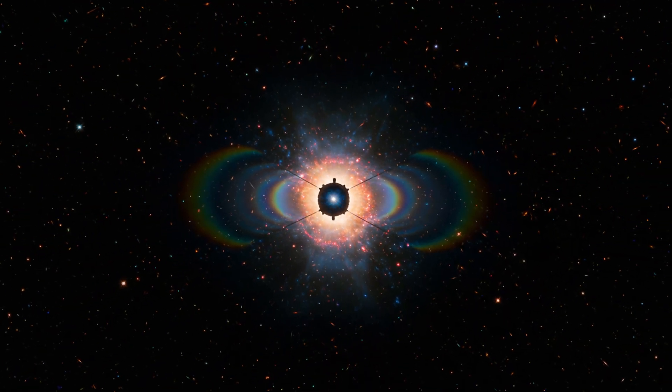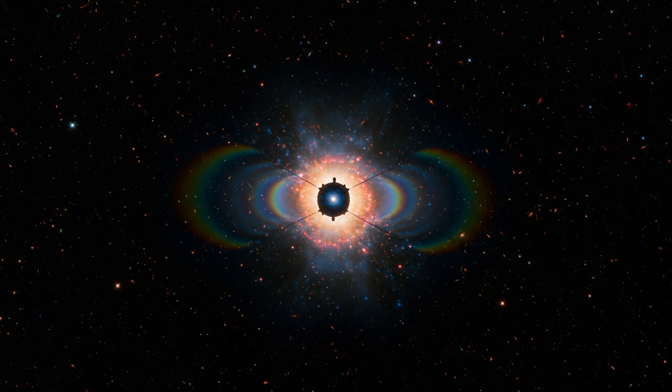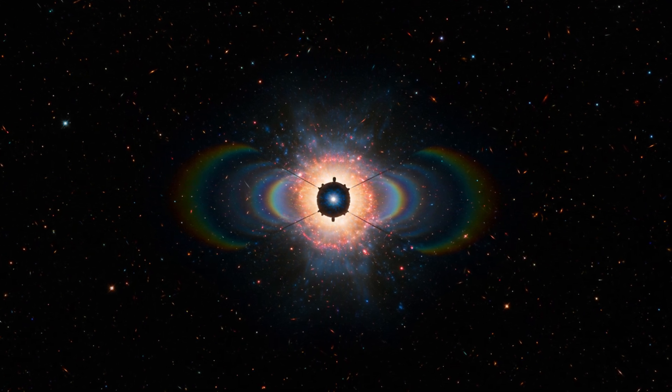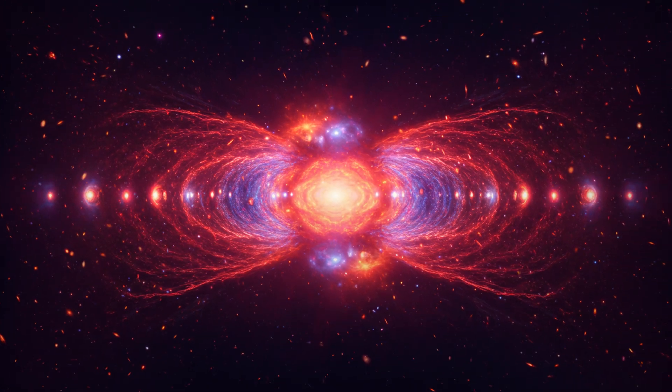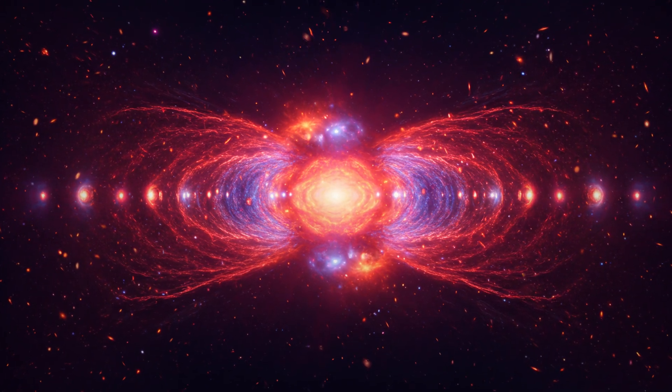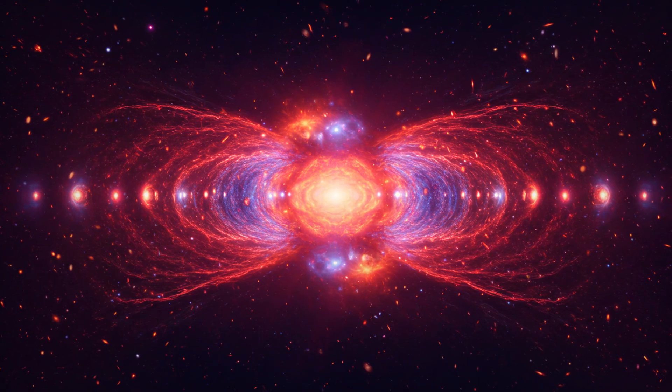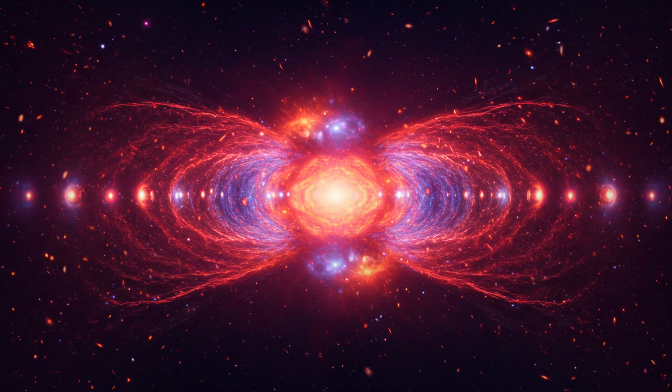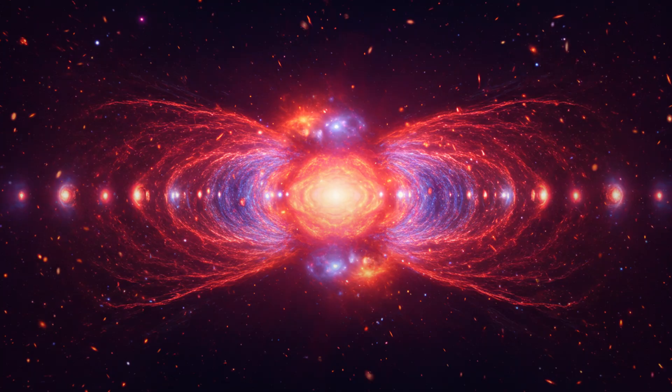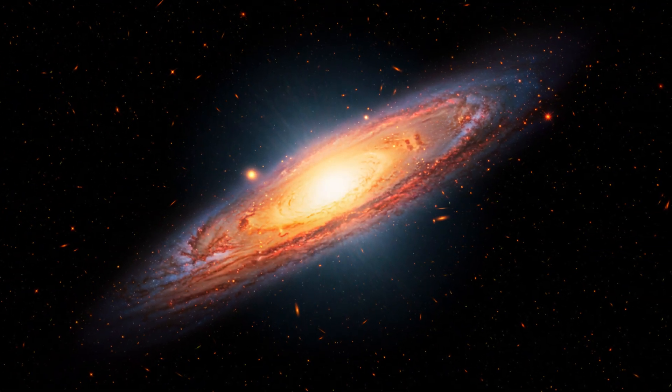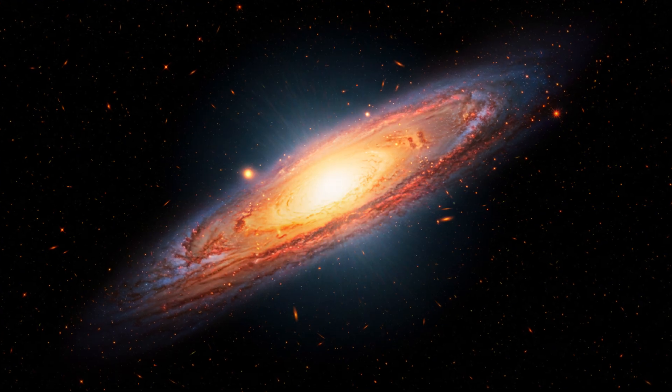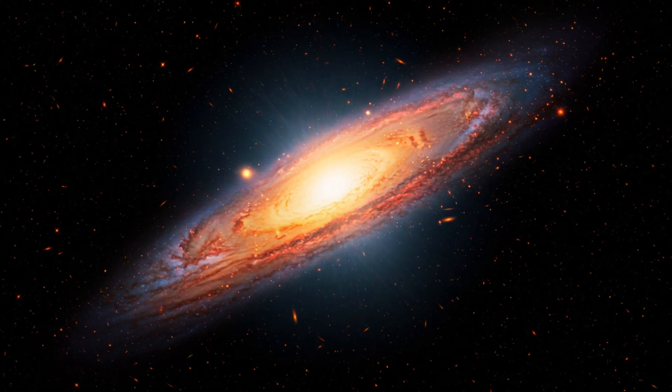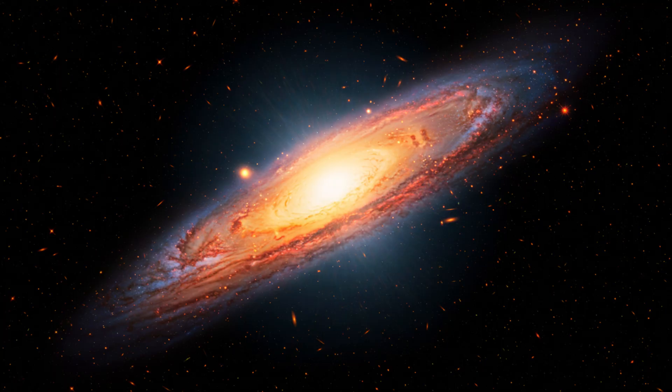Among Webb's many discoveries, one stood out. A strange object nicknamed Abel 2744-QS01. It was spotted behind a massive cluster of galaxies, magnified by gravitational lensing, nature's own telescope. What Webb saw was astonishing. A supermassive black hole in a tiny, primitive galaxy, shining from just 750 million years after the Big Bang.